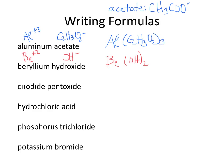For the next one, there's a little bit of a typo — this should be diiodine pentoxide instead of diiodide pentoxide. But you see the number prefixes, which tells you you don't have to worry about how many of each thing. Diiodine is 2 iodines, pentoxide is 5 oxygens: I₂O₅.